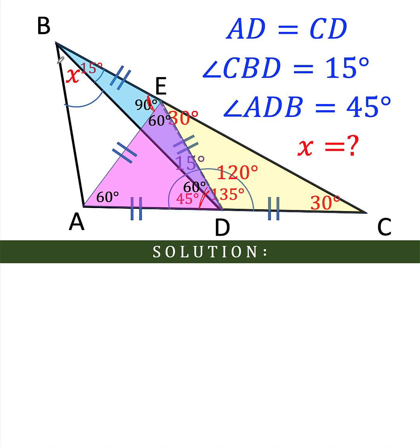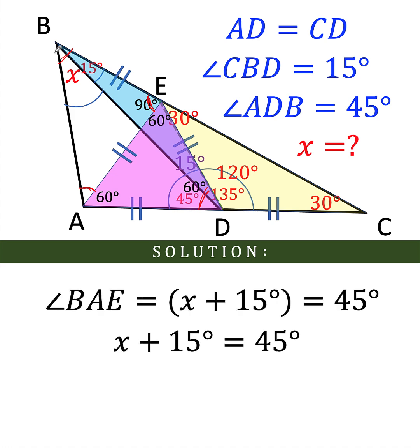So if this is 90 degrees, these two remaining base angles must have a sum of 90 degrees, and each one of them must be 90 over 2 or 45 degrees. So x plus 15 is 45 degrees. This angle BAE must also be 45 degrees, plus this 90 degrees, together the three will give us 180 degrees.